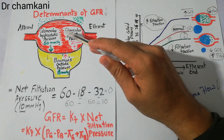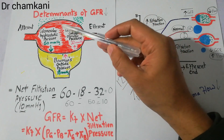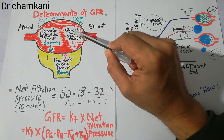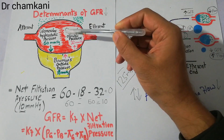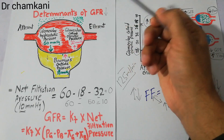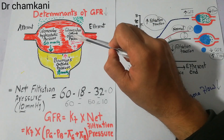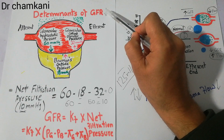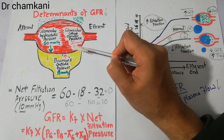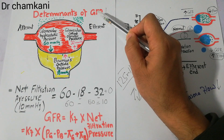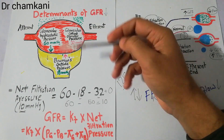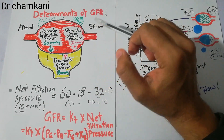Any change that increases the protein components in the glomerular capillaries will increase the glomerular colloid osmotic pressure, and any change that decreases it will decrease glomerular colloid osmotic pressure. If glomerular colloid osmotic pressure increases, the GFR will decrease. If this pressure decreases, then GFR will increase. Because this is a negative pressure opposing filtration, its effects on GFR are opposite.